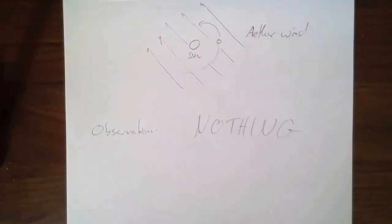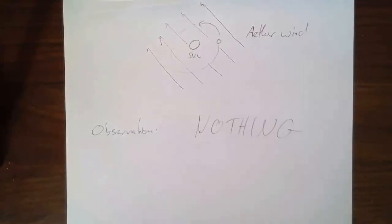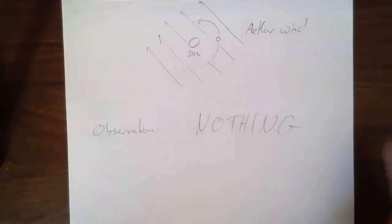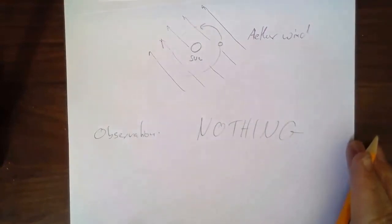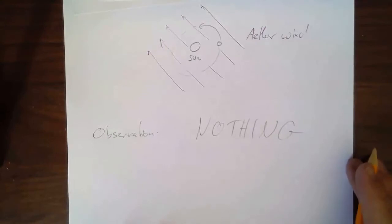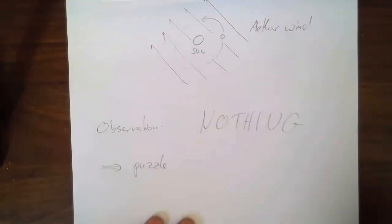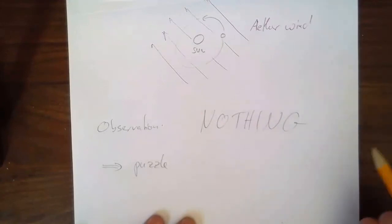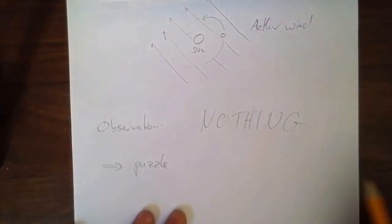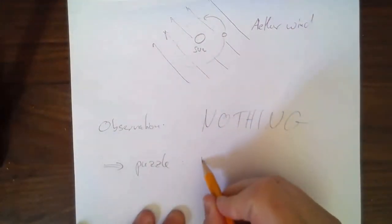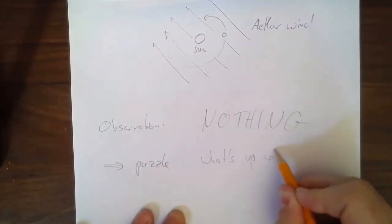What did they find? Nothing. They did not find ether wind. They did not find this gradual phase shift over time. They found nothing. The interference pattern sat there and did absolutely not change at all. The Michelson-Morley experiment is, in a way, perhaps one of the most important non-discoveries in science history. They looked and looked and found nothing. This creates a big puzzle - what is going on with light? The rest frame idea made sense, right? Light moving at a certain speed - well, in what frame? How can there not be an answer?